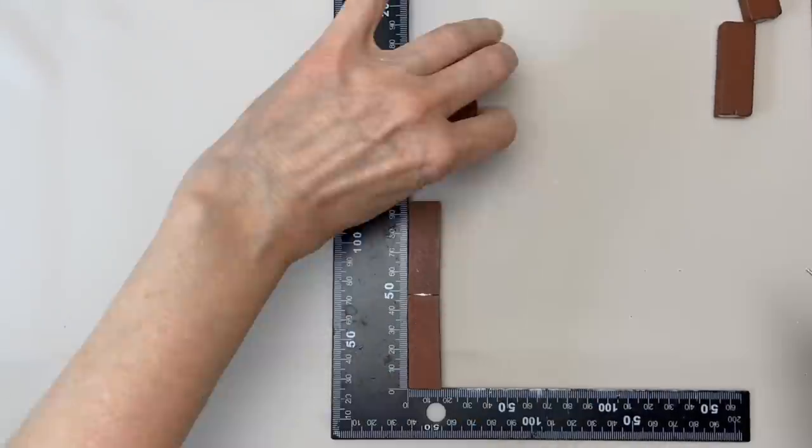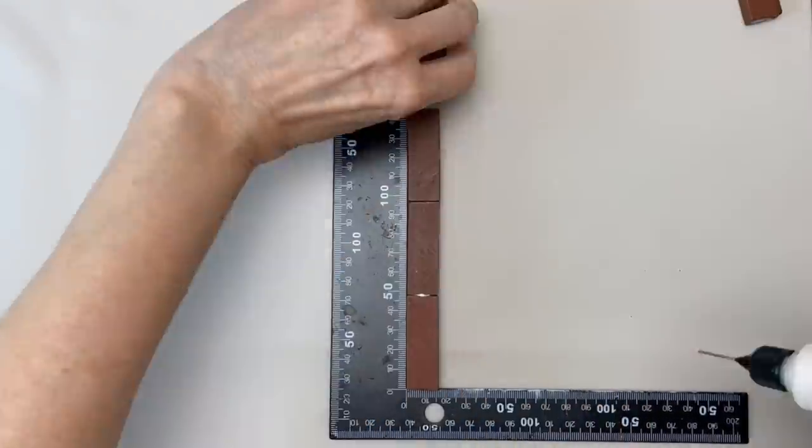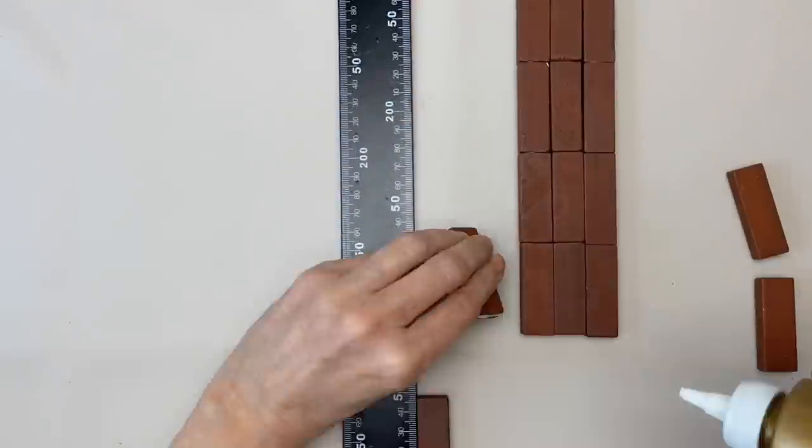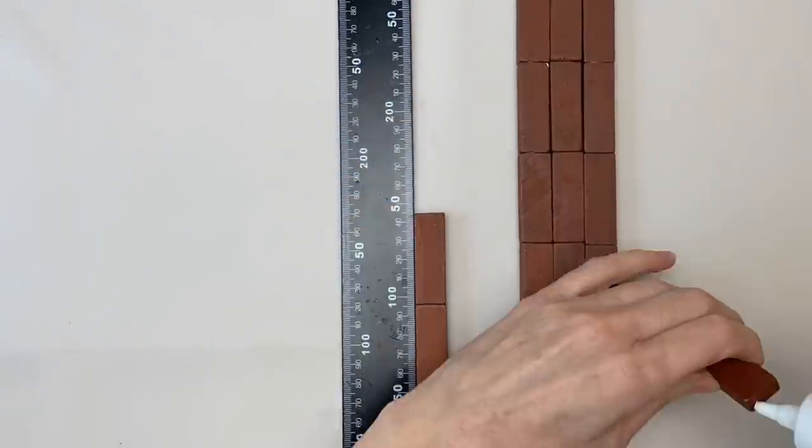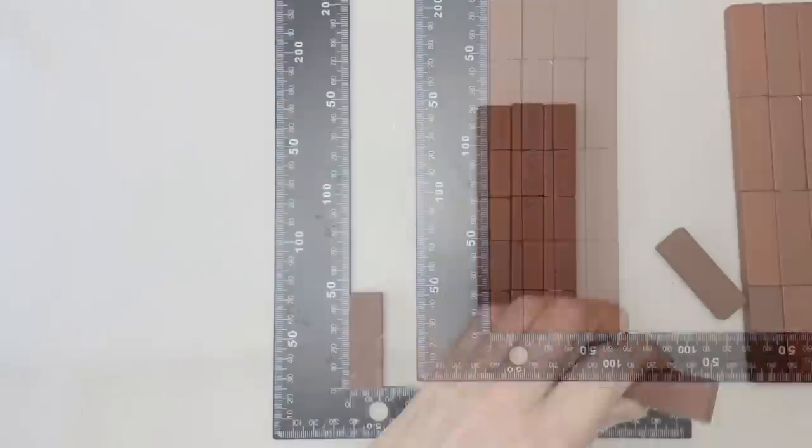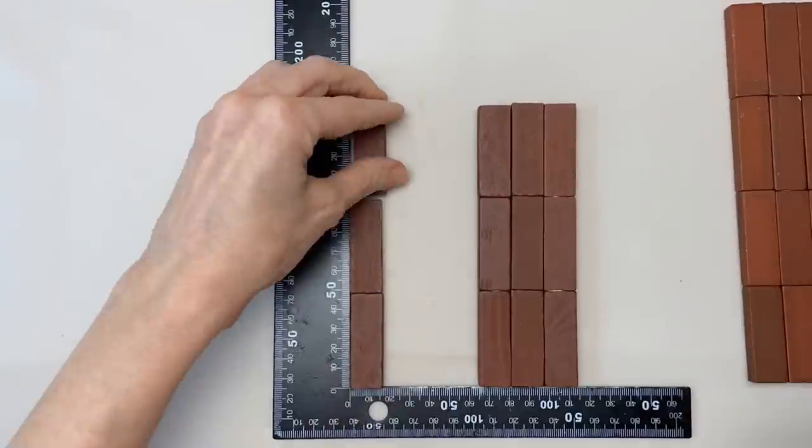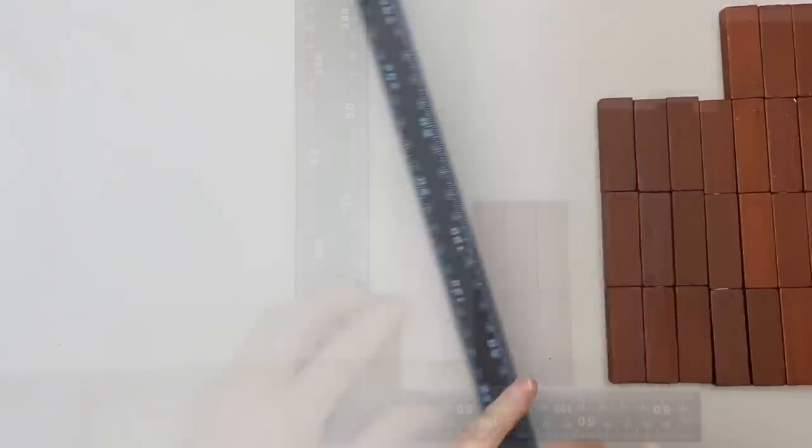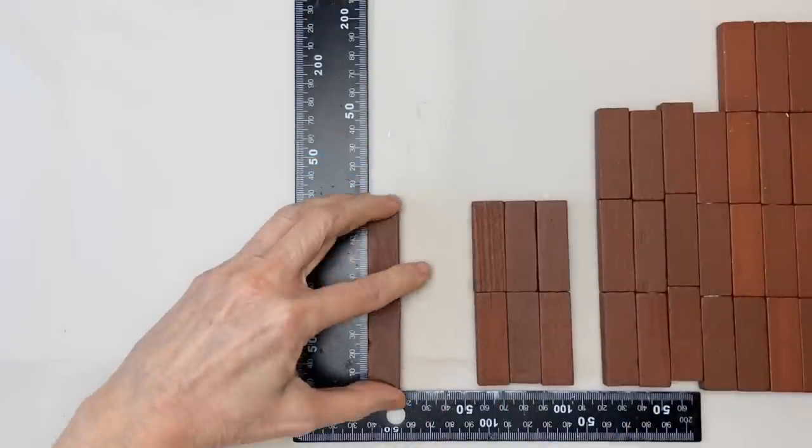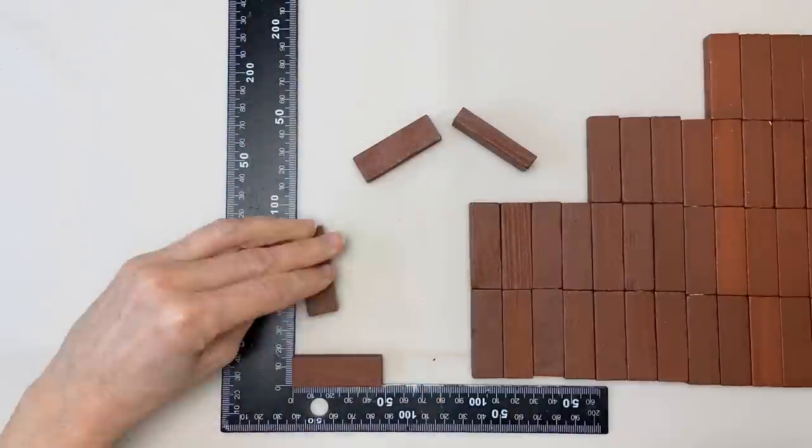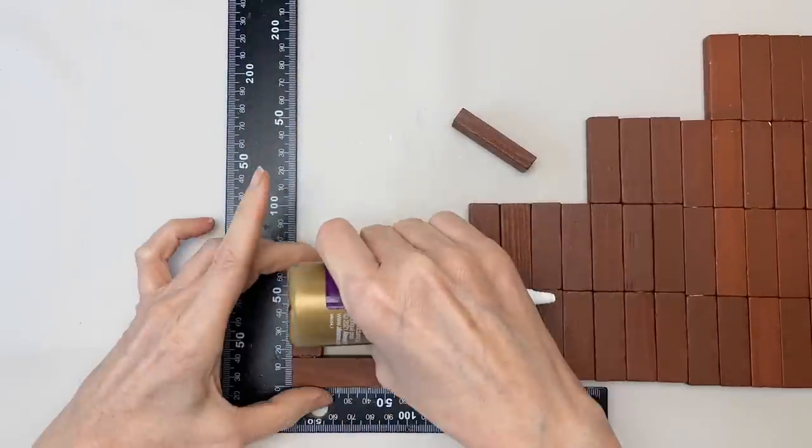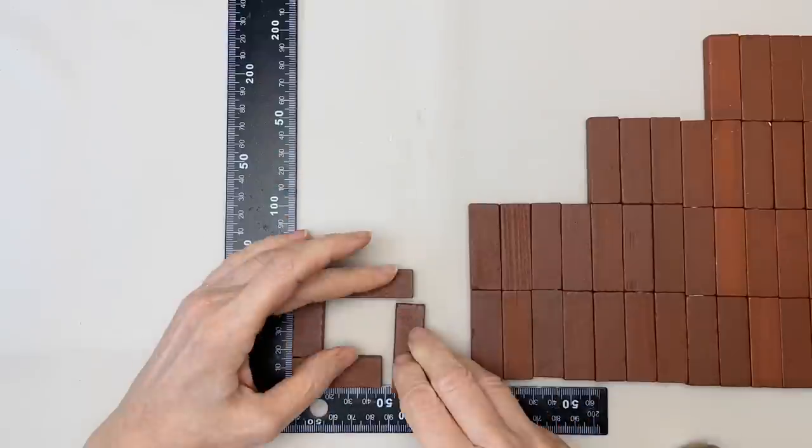I also decided to make one with the tumbling tower blocks ugly stepsister, the brown blocks. I've got so many of these left over. So pretty much the same sequence, five, four, three, two, one. Sorry, the footage is so, I don't know, what would you call it, jumpy? Hopefully it doesn't make you sick to your stomach.